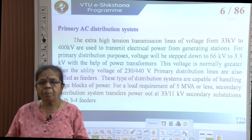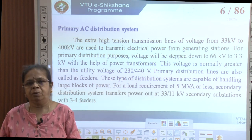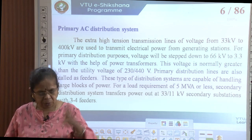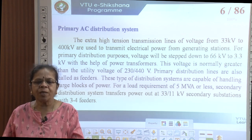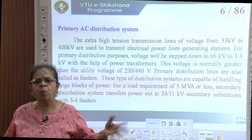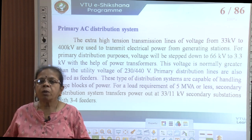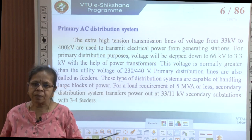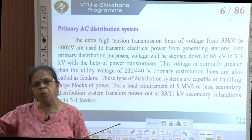If your load requirement is less than 5 MVA — say an apartment with 100 or 1000 houses needing about 5 MVA — then we have what is called the secondary distribution system, where power transfer is at a lower voltage. At secondary substations you can have about 3 to 4 feeders. For example, I generate around 22 kV and transmit at 400 kV. Then at the primary distribution substation I step it down to 132 kV or 66 kV, and through feeders with no tapping in between, I give power to smaller substations.